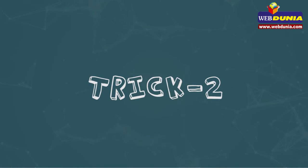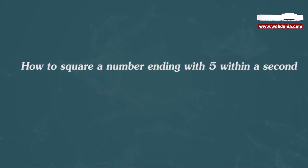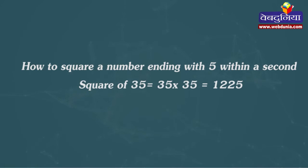Trick 2: How to square a number ending with 5 within a second. Square of 35 equals 35 multiplied by 35 equals 1225.